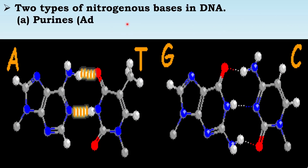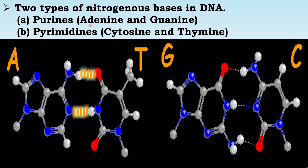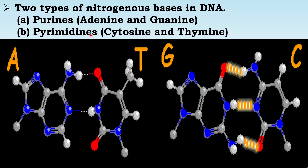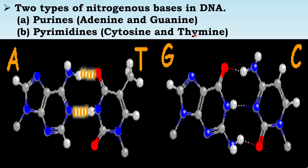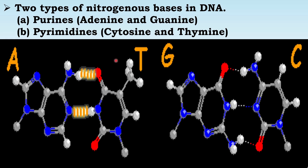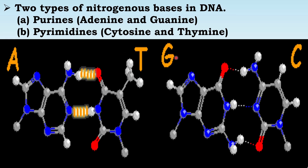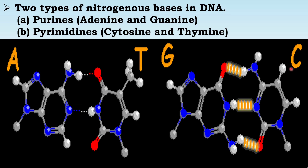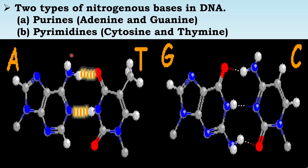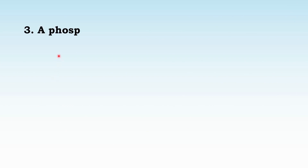There are two types of nitrogenous bases. Number one: purines — which include adenine and guanine. Number two: pyrimidines — which include cytosine and thymine. In the diagram, A stands for adenine (purine), T stands for thymine (pyrimidine), G stands for guanine (purine), and C stands for cytosine (pyrimidine). The third component is the phosphate group, which is the most important.